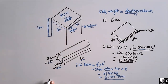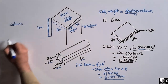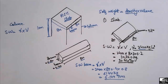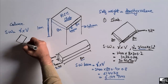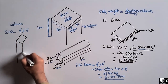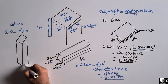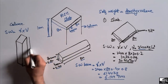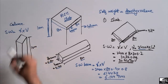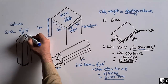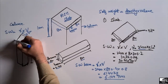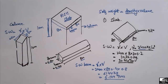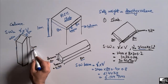This vertical member is a column and we want to find its self weight. Self weight equals γ multiplied by volume. The column is a square column. The height of the column is 10 meters. The two cross-sectional dimensions are each 500 mm or 0.5 meters — since it is a square column, the cross-sections are the same. So the height is 10 meters, the width is 0.5 meters, and the other dimension is also 0.5 meters.